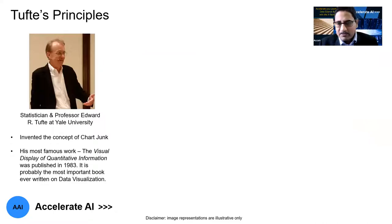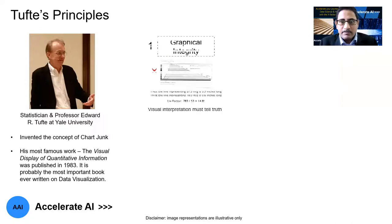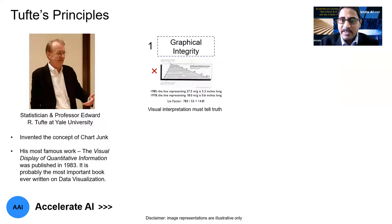Now let's jump on to Edward Tufte's rules and understand what these concepts are and how they relate to data visualization. Edward Tufte is a famous statistician and professor at Yale University. He invented the concept of chart junk — we'll come back to that shortly. He also wrote the book 'The Visual Display of Quantitative Information', published in 1983, which is probably the most important book ever written on data visualization. The first key principle is graphical integrity. What he intends is that the visual representation must tell the truth, and we should look at how we can minimize the lie factor.